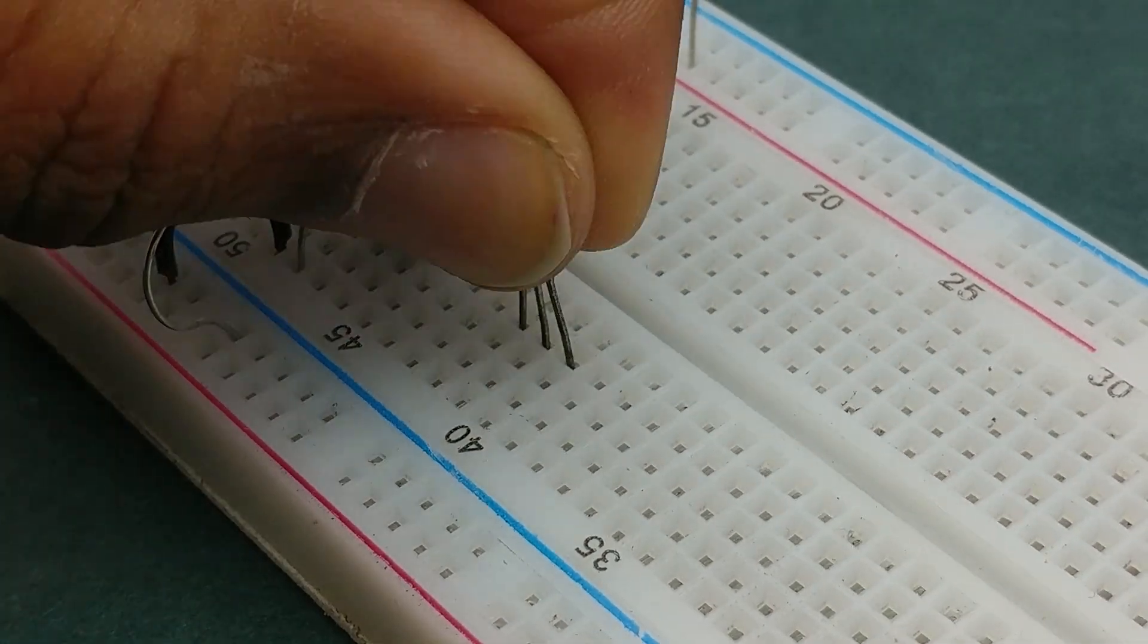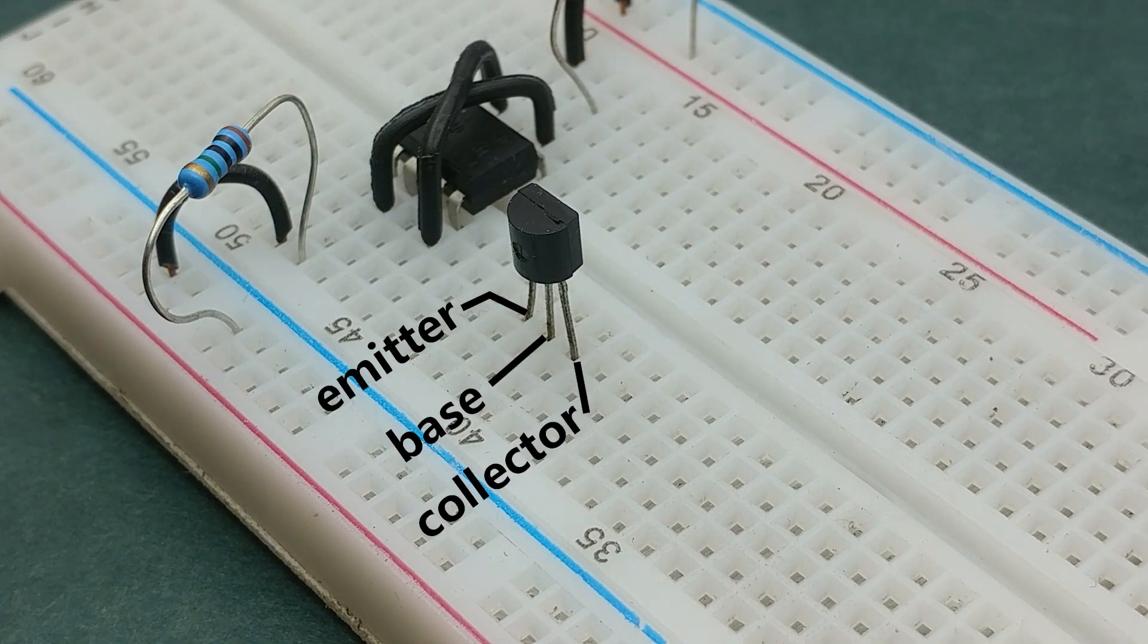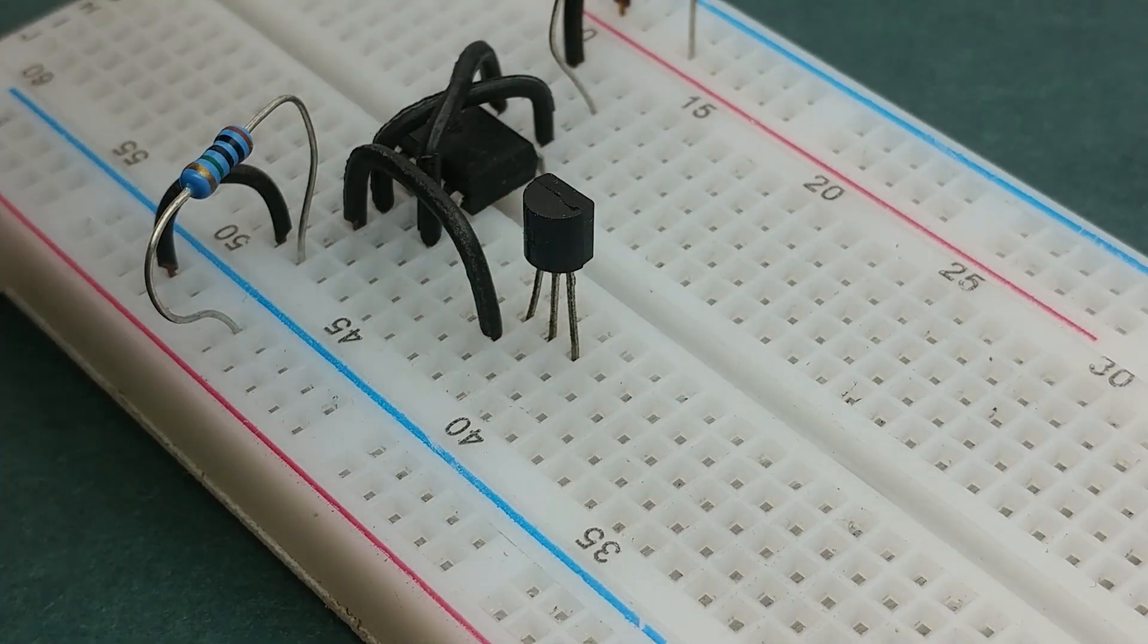Next place an NPN transistor on the breadboard. I've used a BC547 transistor and these are the pinouts with respect to its curved surface. Connect its emitter pin to pin 2 of the 555 timer IC.